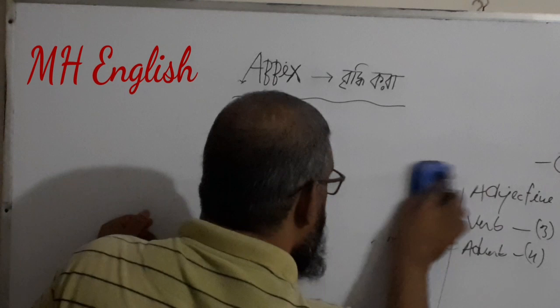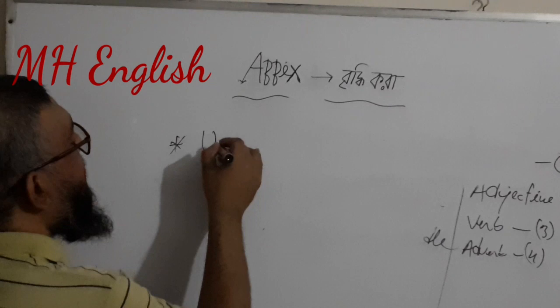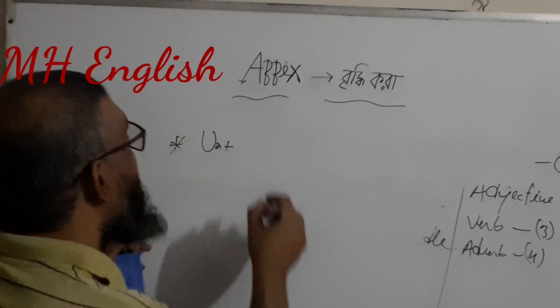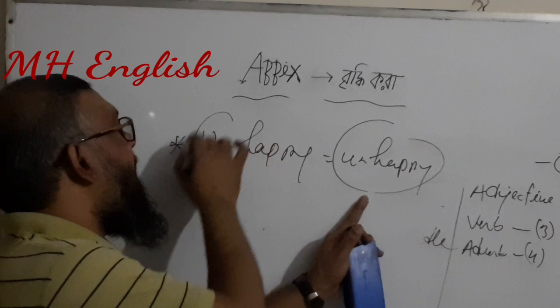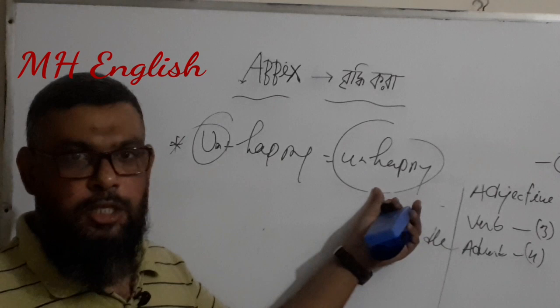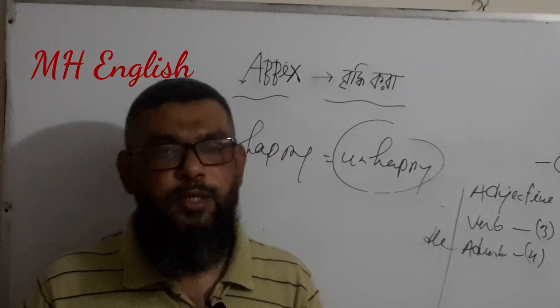The first prefix example is 'un-'. For example, 'unhappy' — unhappy is a prefix.